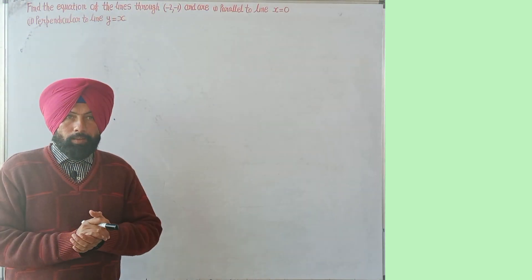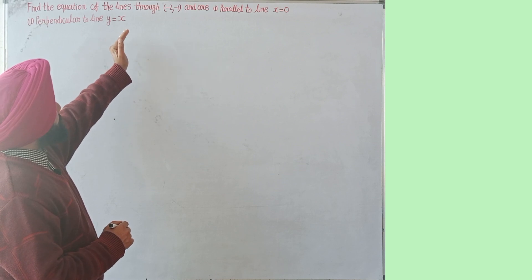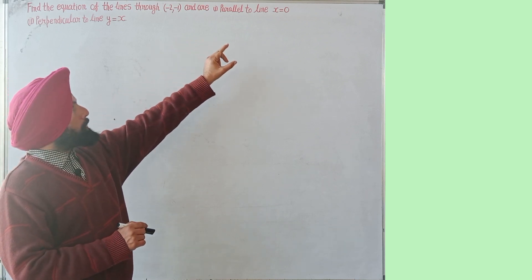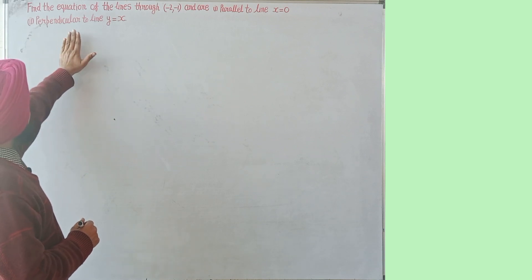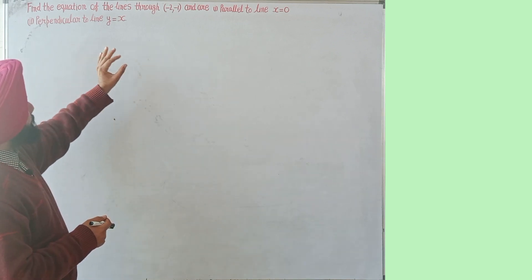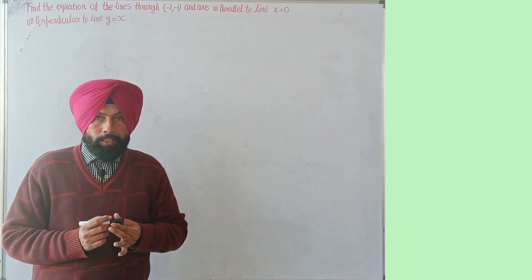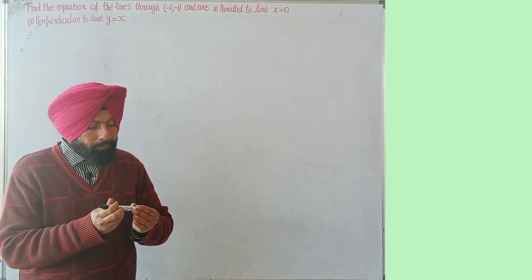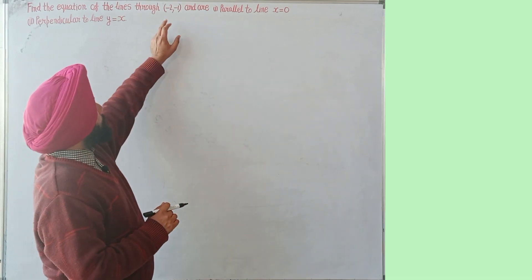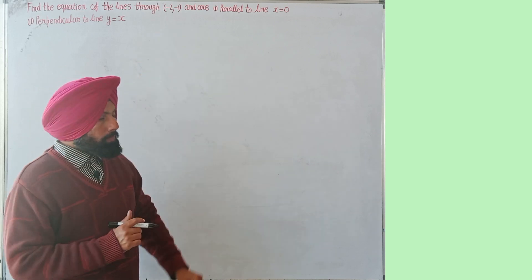In the second sum, students, we have to find the equations of the lines through the point minus 2, minus 1. First part: parallel to the line x equal to 0. Second part: perpendicular to the line y equal to x. So we have to find equations of lines which pass through minus 2, minus 1.